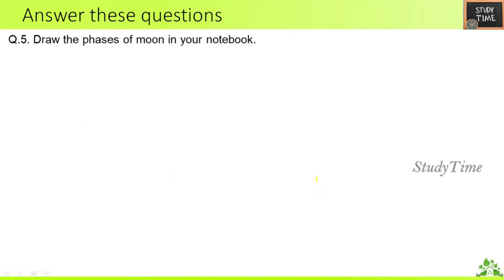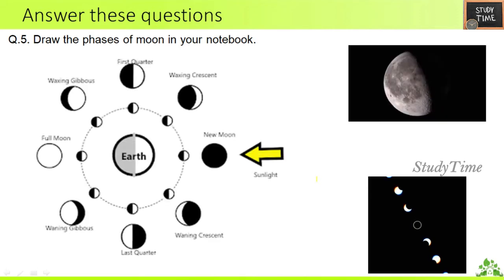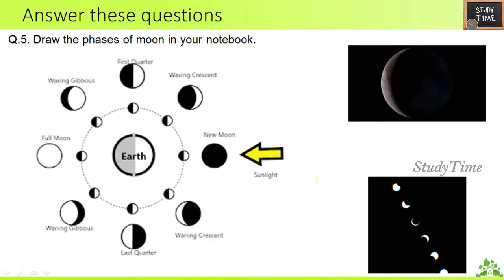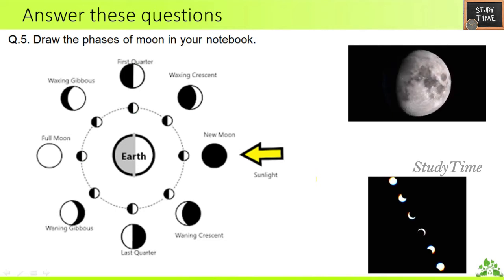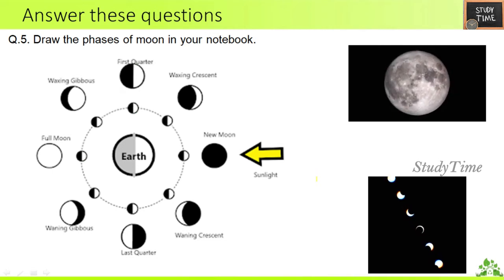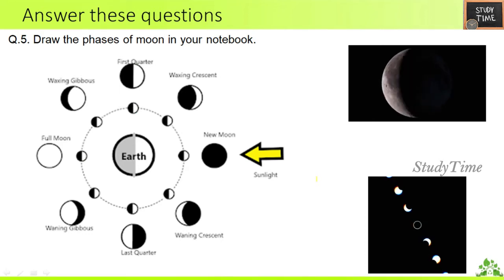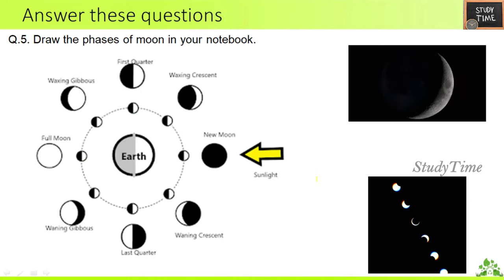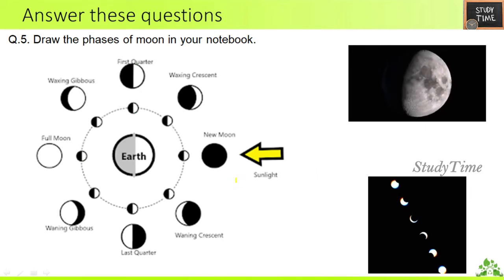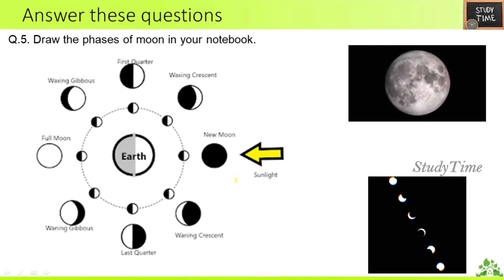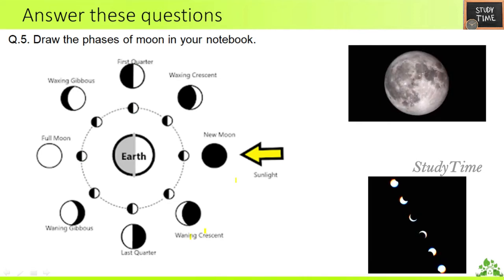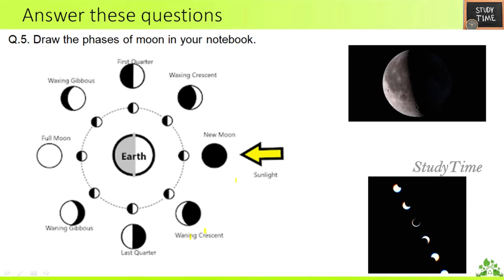Next, draw the phases of the moon in your notebook. Pause the video and draw this in your notebook. The phases of the moon start from new moon, and the cycle occurs because of the movement of the earth.